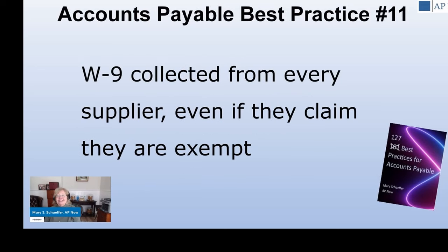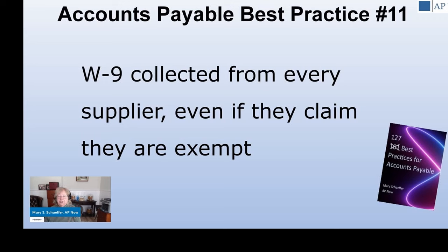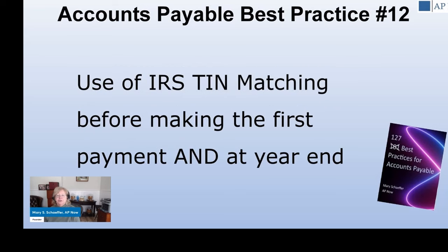Accounts payable best practice number eleven: you should be getting a W-9 from every single supplier you do business with when you first begin the relationship. Some suppliers will say they're exempt and don't have to provide a W-9. You still need to get it and reach that conclusion yourself, because if the IRS audits you for an information return audit and it turns out they weren't exempt, saying 'they told me they were exempt' will bear no weight with the IRS. You are expected to make that determination yourself — and you only need to get it once when you first start doing business.